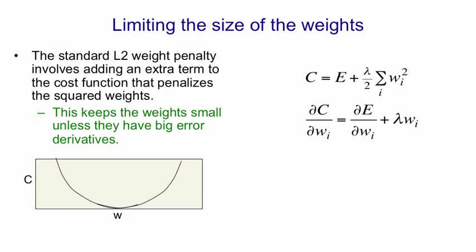That coefficient in front of the sum squared weights is sometimes called the weight cost. That determines how strong the penalty is. If you differentiate, you can see the derivative of this cost is just the derivative of the error plus something that's to do with the size of the weight and the value of lambda.